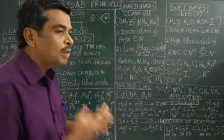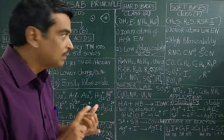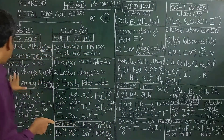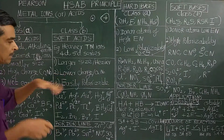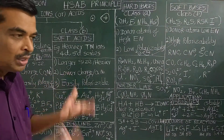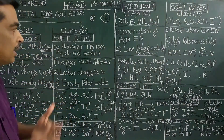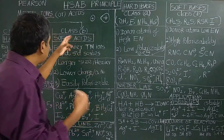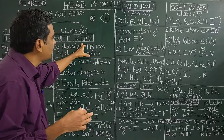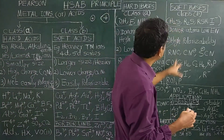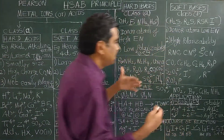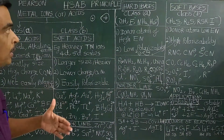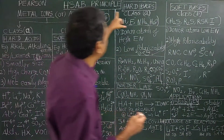The third application is the formation of metal carbonyls. Metals in zero oxidation state are classified as soft acids, and CO is a soft base. Therefore, nickel in zero oxidation state forms nickel tetracarbonyl, Ni(CO)4, based on the HSAB concept — soft acid interacting with soft base.